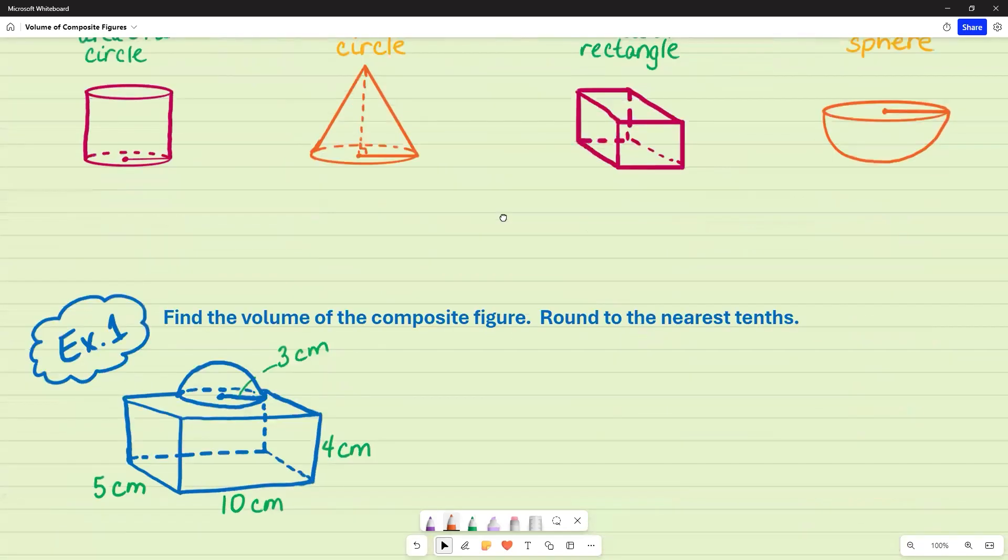For example one, we're going to find the volume of a composite figure and we're going to round it to the nearest tenth. So I see that I have a hemisphere on top of a rectangular prism.